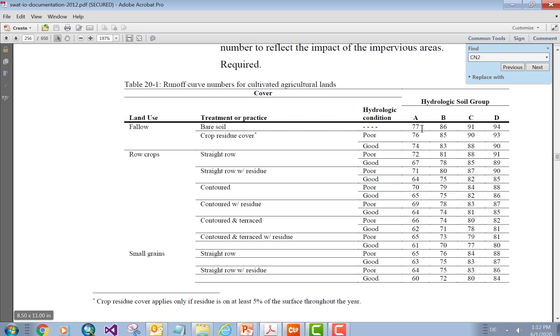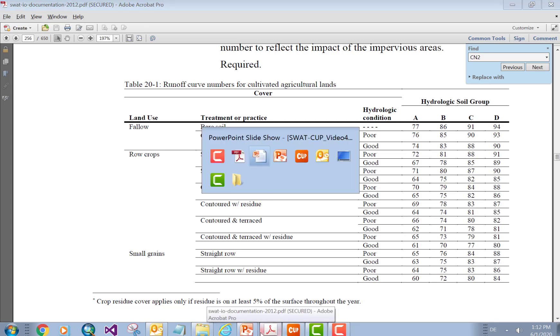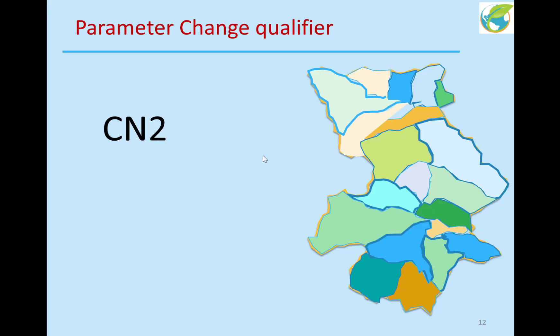So, please read this section in your SWOT input-output manual. Now, if I go back to my presentation here, and I show you, initially, CN2 has such a value based on land use, soil, etc.